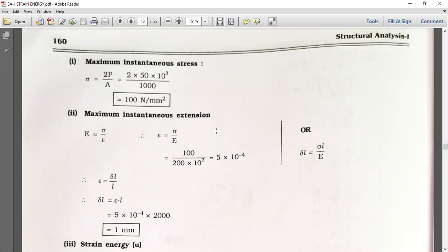Similarly, maximum instantaneous extension. Epsilon is equal to delta upon E, which equals sigma upon E. Put the values: sigma 100, E 200 times 10 raised to 3, we get 5 times 10 raised to minus 4. Since strain equals delta L upon L, delta L equals epsilon times L, equals 5 times 10 raised to minus 4 times 2000, equals 1 mm. The elongation is 1 mm, or we can say extension is 1 mm.